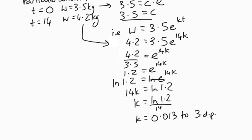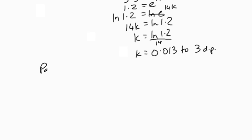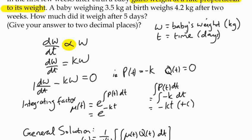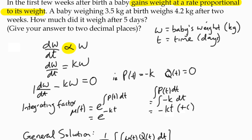We've worked out the value of k, which means we can come up with our particular solution: w, the weight of the child, is 3.5 times e to the power 0.013t. There we go, we've got a particular solution. However, that's not the end of the question.